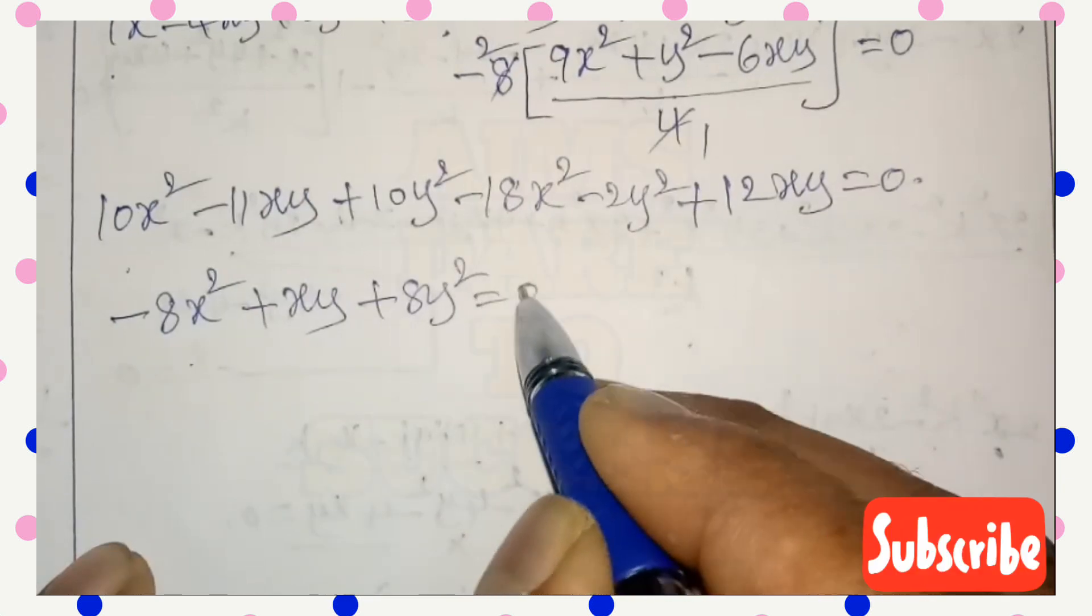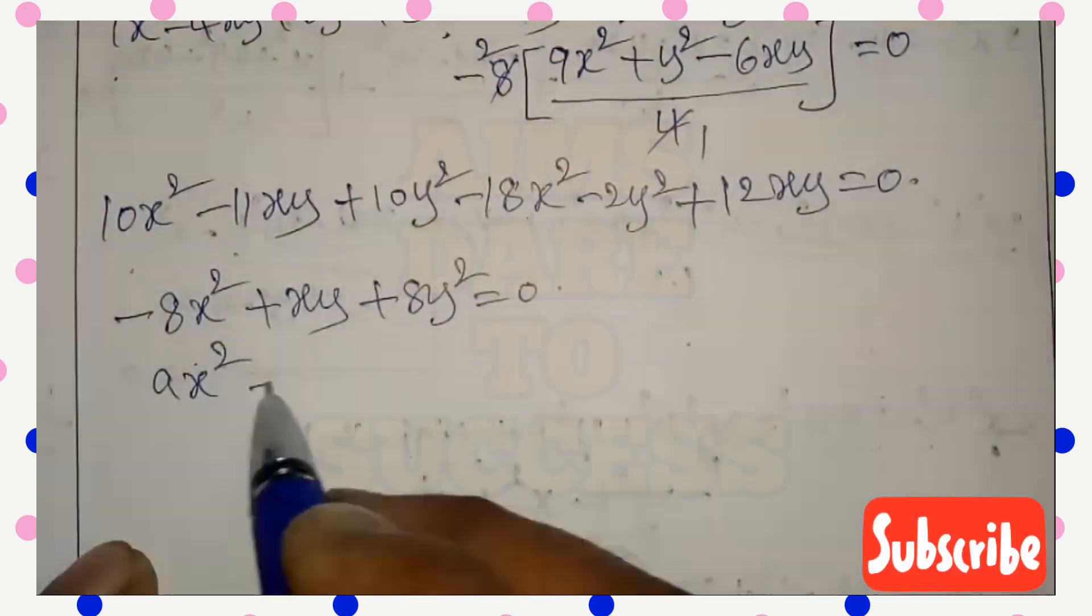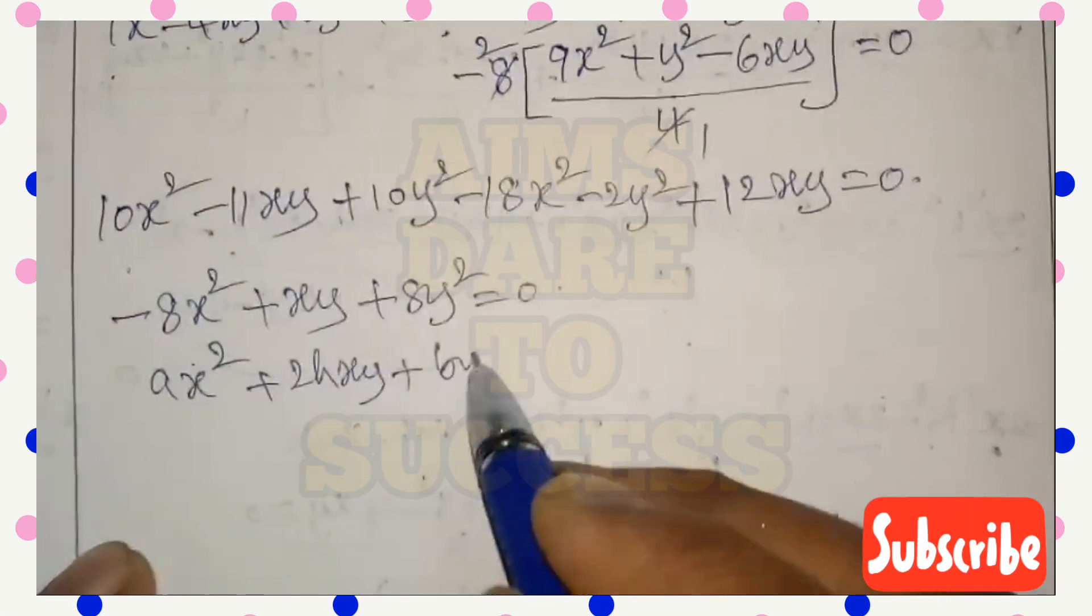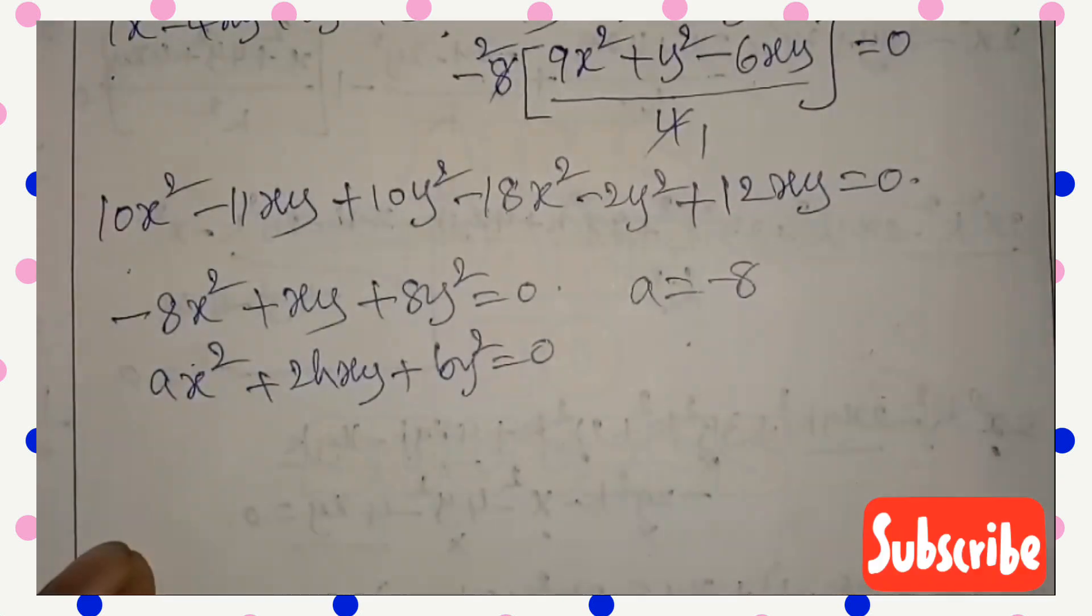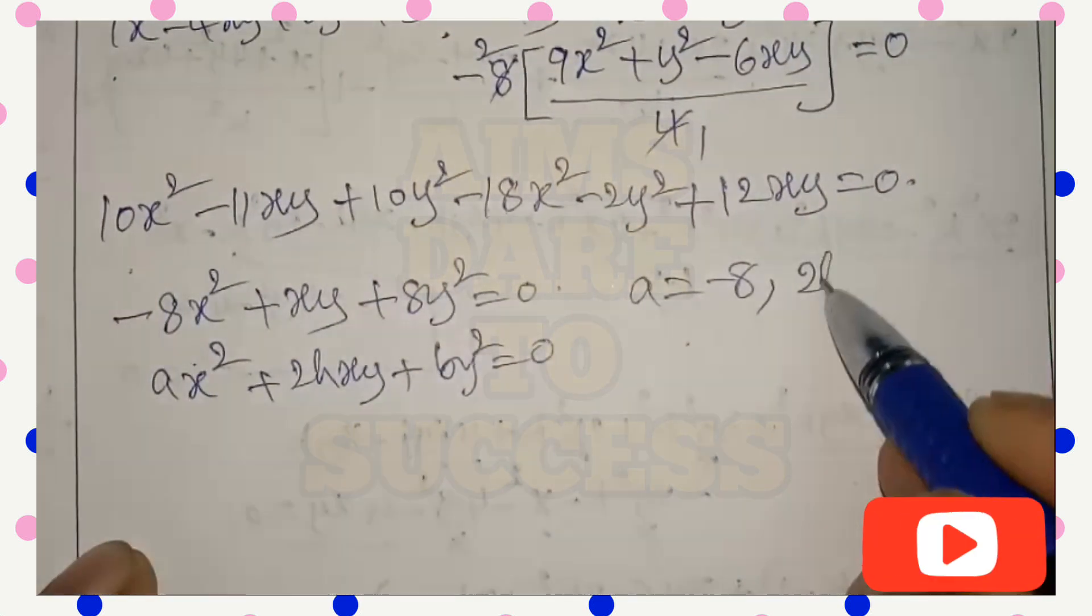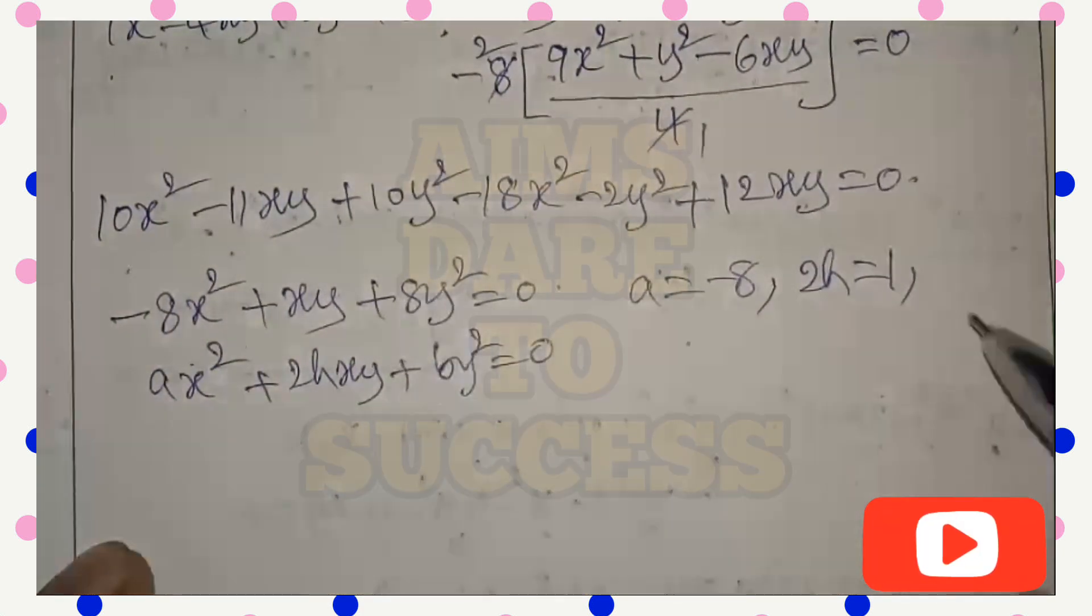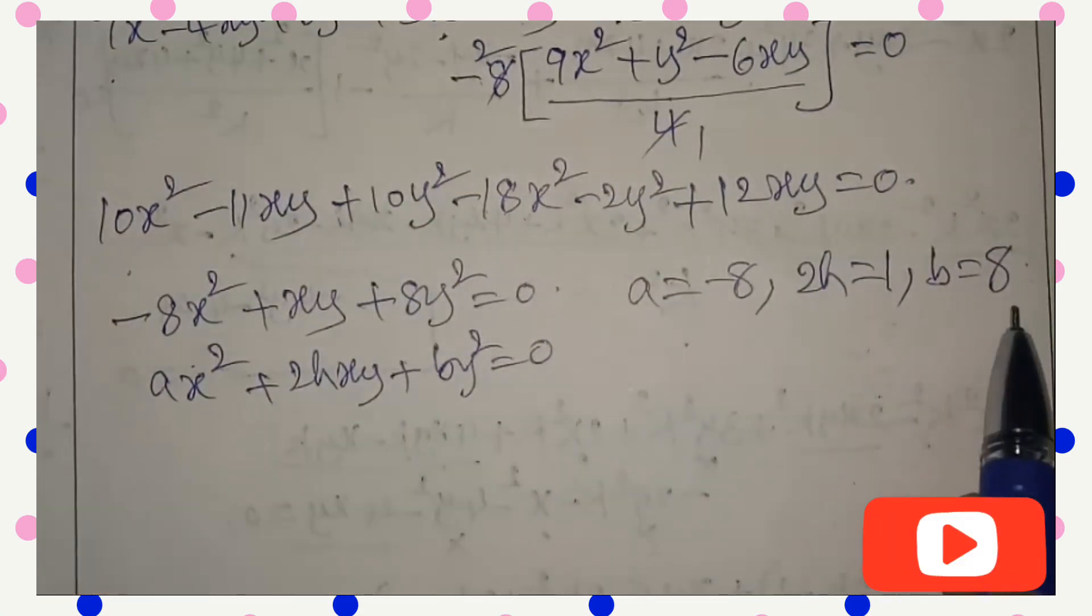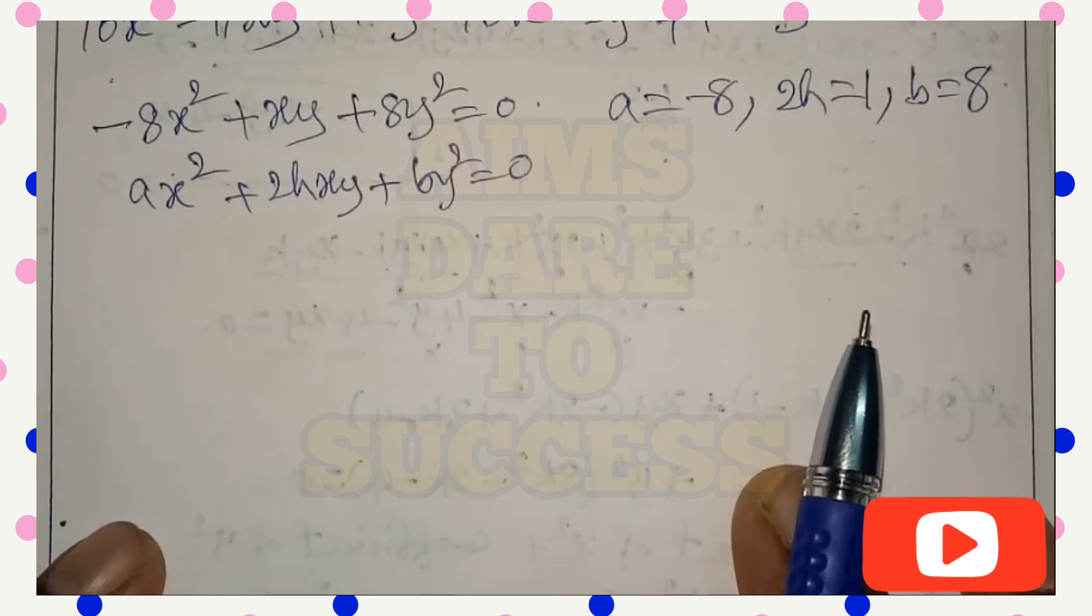So this looks like ax² + 2hxy + by² = 0. Comparing values: comparing x² coefficients, a = -8. Comparing xy coefficient, 2h = 1. Comparing y² coefficients, b = 8. So a value -8, 2h value 1, b value 8.